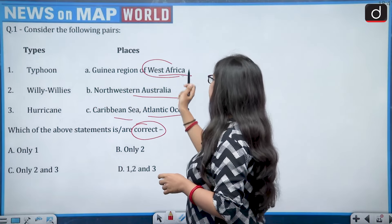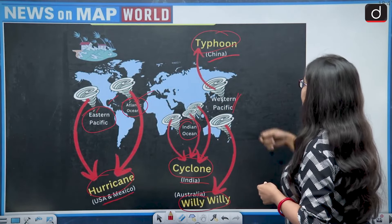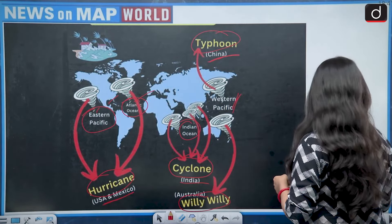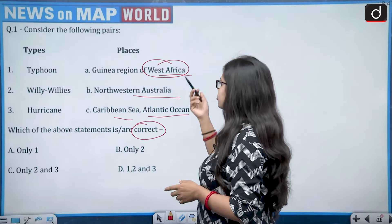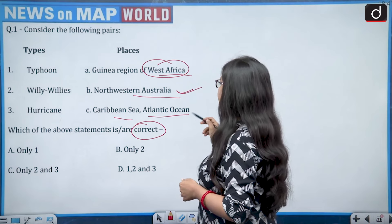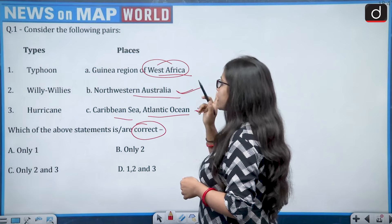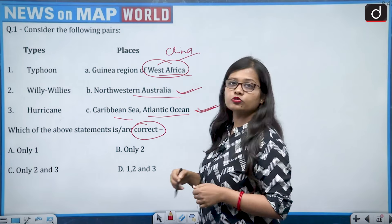So if we check each pair: typhoon is associated with China and the South China Sea region, not the Guinea region of West Africa — so the first pair is wrong. Willy-willy in northwestern Australia is correct, and hurricane in the Caribbean Sea or Atlantic Ocean is also correct. So second and third are correct, making the answer option C.